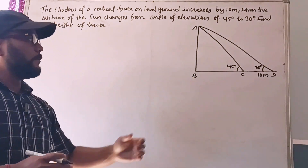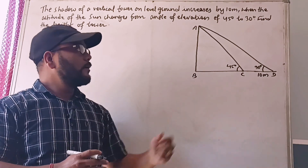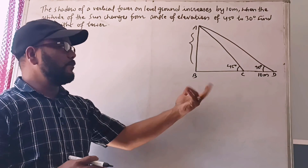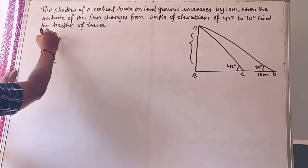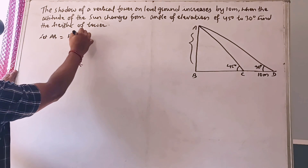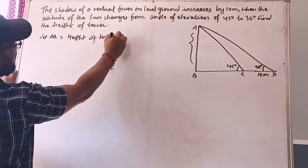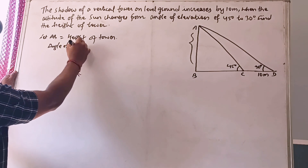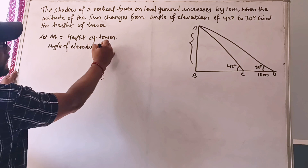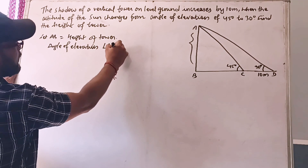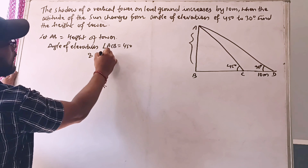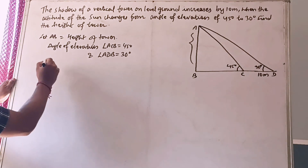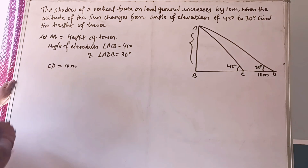This type of figure is very important for height and distance questions. You are supposed to find the height of the tower, meaning the value of AB. Angle ACB equals 45 degrees and angle ADB equals 30 degrees. The length of the shadow is increased by 10 meters.